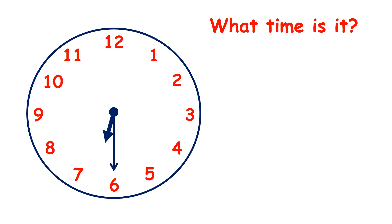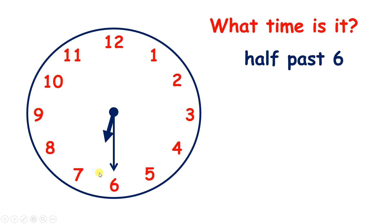And what time is it now? The minute hand is on the 6, so it's half past, and the hour hand is between 6 and 7. So it's half past 6, or 6:30 on a digital clock.